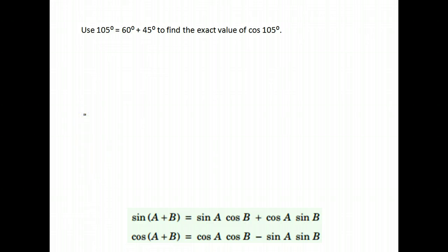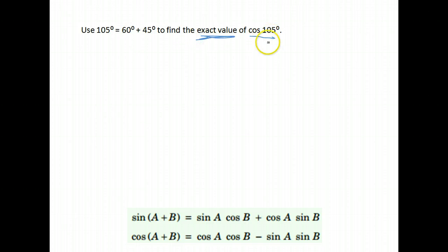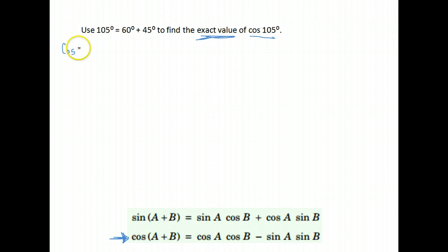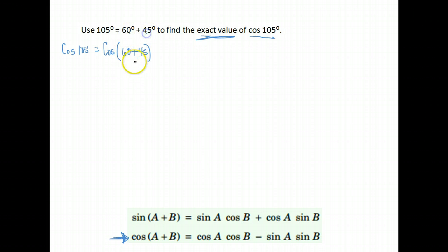Let's do another one. Here we're asked to use the fact that 105 is 60 degrees plus 45 degrees, but this time we're asked to find the exact value of the cosine of 105 degrees. So this time, we're going to have to use the identity for the cosine of A plus B. We're asked to find the cosine of 105, but we want the exact value, not the decimal value. So we need to use two angles that we know the exact values for: 60 degrees and 45 degrees.